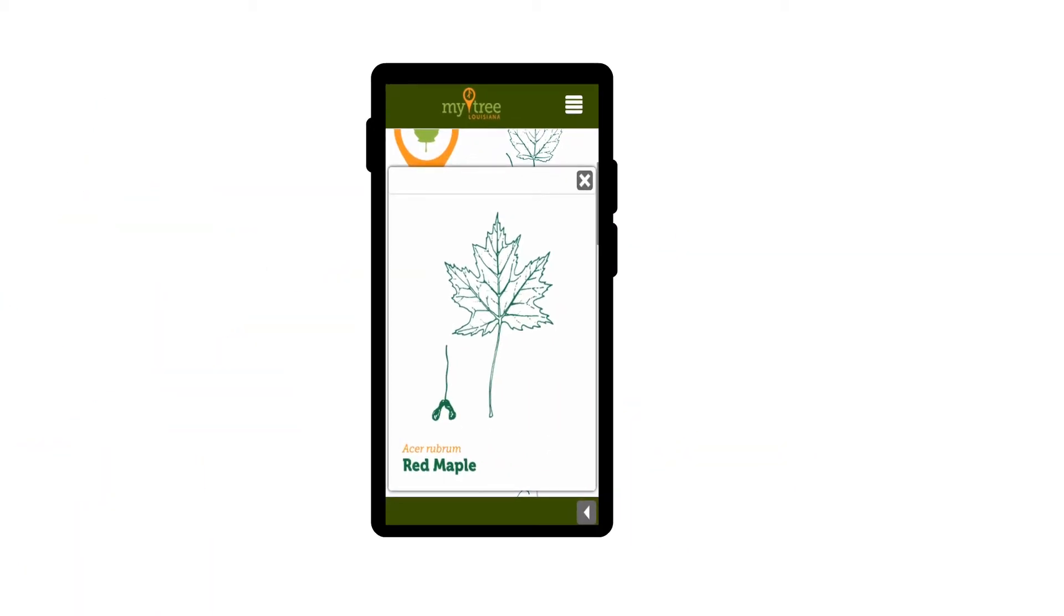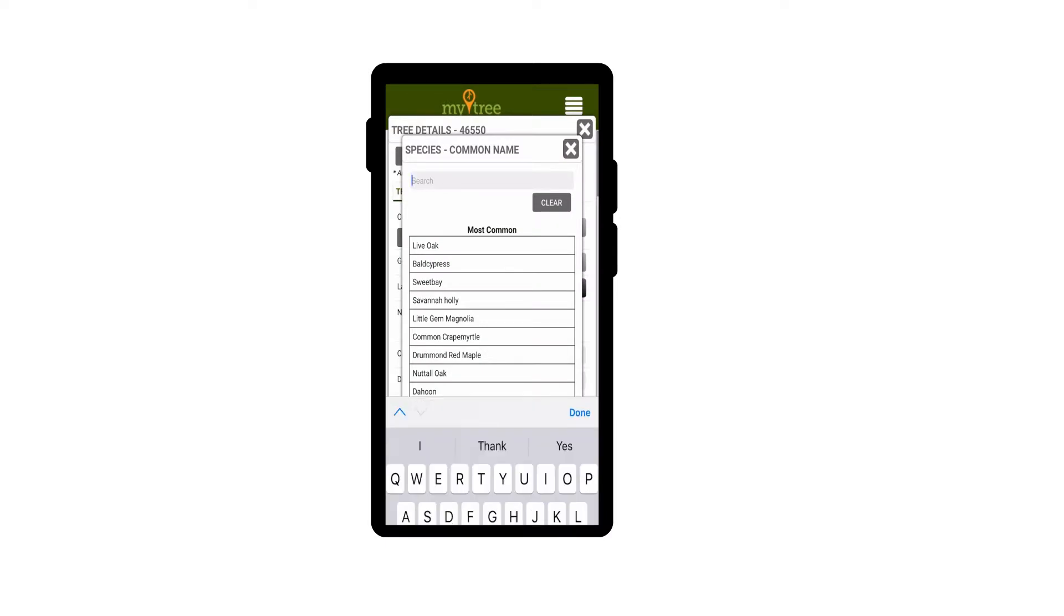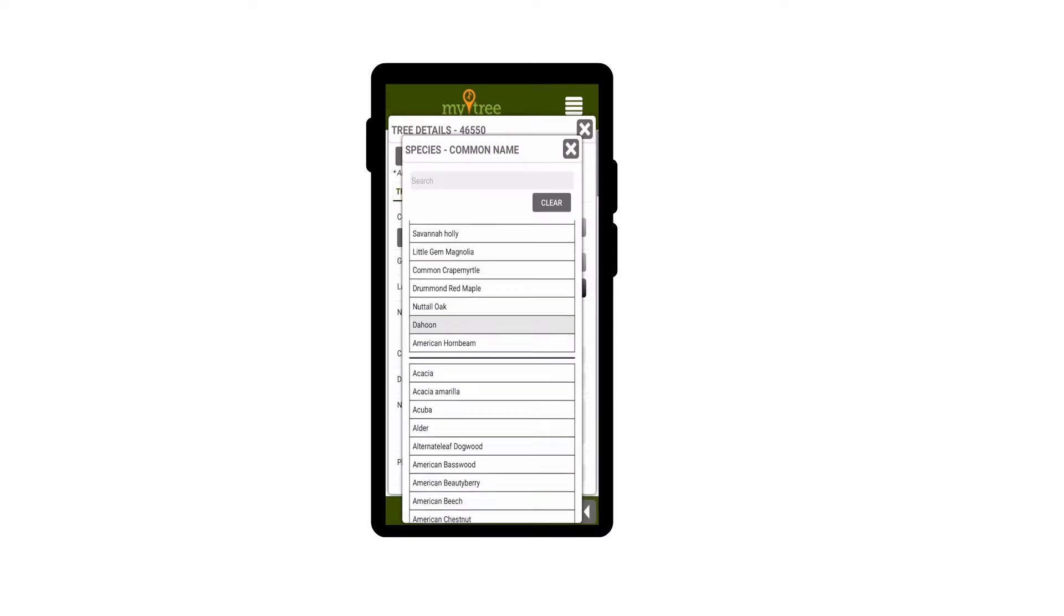If you already happen to know the tree identity, you can click on the Common Name drop-down and either type in the search bar or scroll through the list to find the one you are looking for.